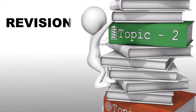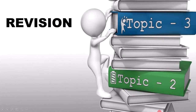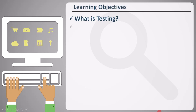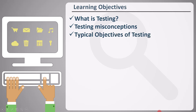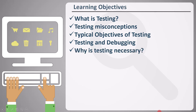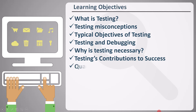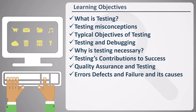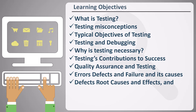Let's revise all the important points which we covered until now. We have covered: what is testing, testing misconceptions, typical objectives of testing, testing and debugging, why is testing necessary, testing's contributions to success, quality assurance and testing, errors, defects and failures and its causes, defects root causes and effects, and 7 testing principles.